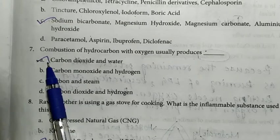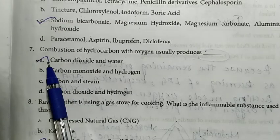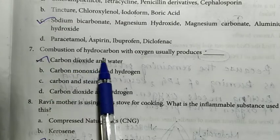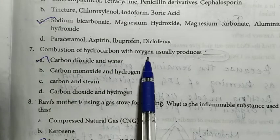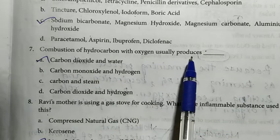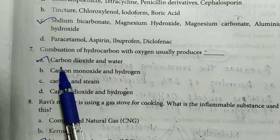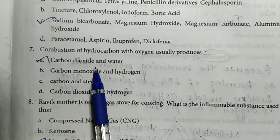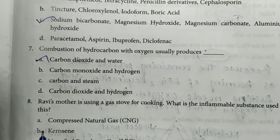Seventh question — Combustion of a hydrocarbon with oxygen usually produces what? Answer is option A: Carbon dioxide and water.